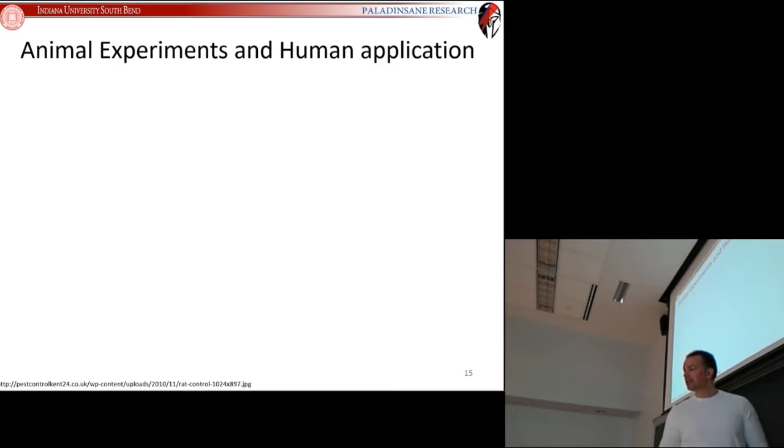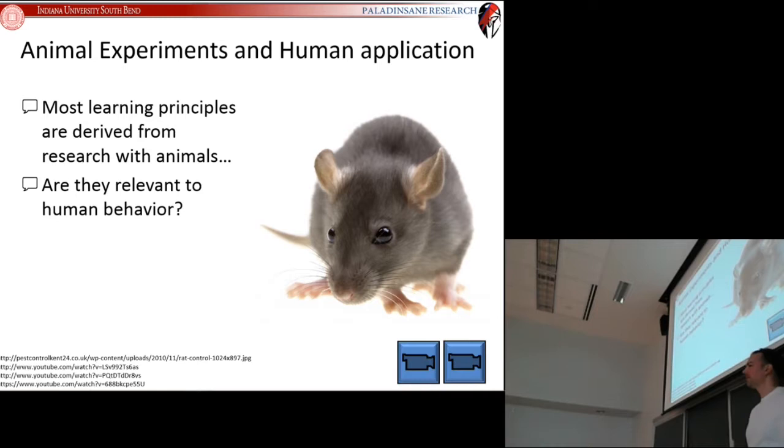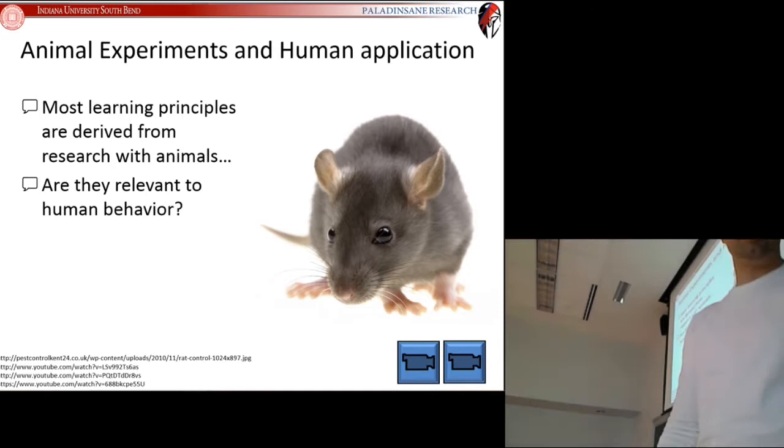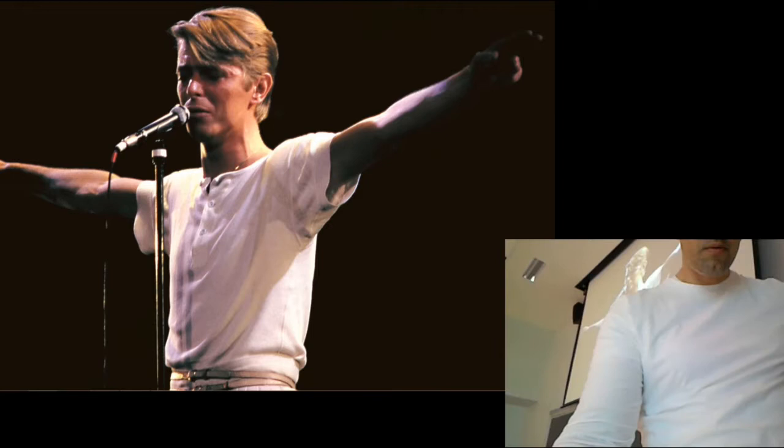The next question is why are we studying animals? In your reading, many experiments that led to theories of learning were done on rats, pigeons, and dogs. Most of the groundbreaking work was done with animals. So the question is, if we've learned a lot from rats, is that actually relevant to human behavior?